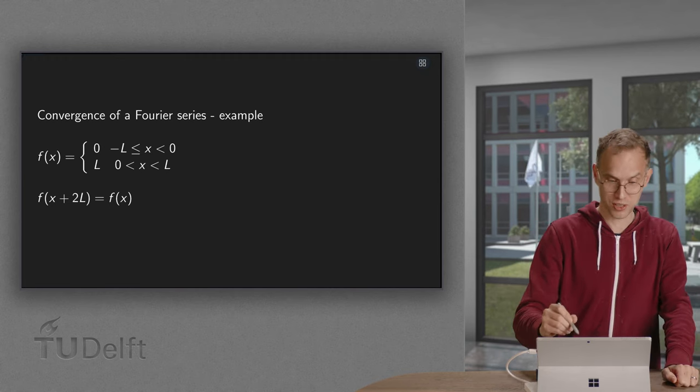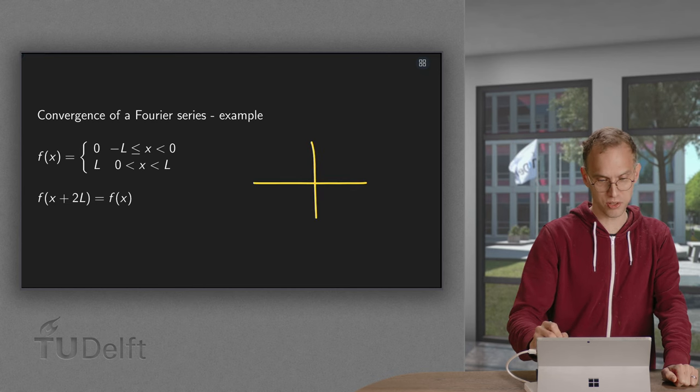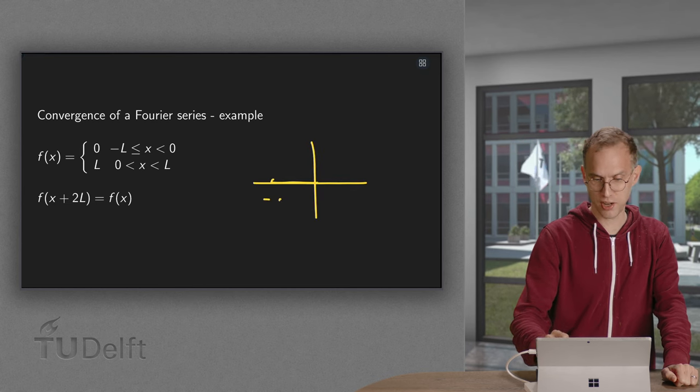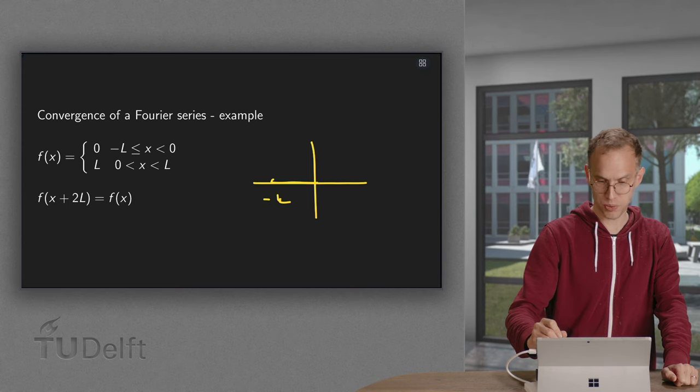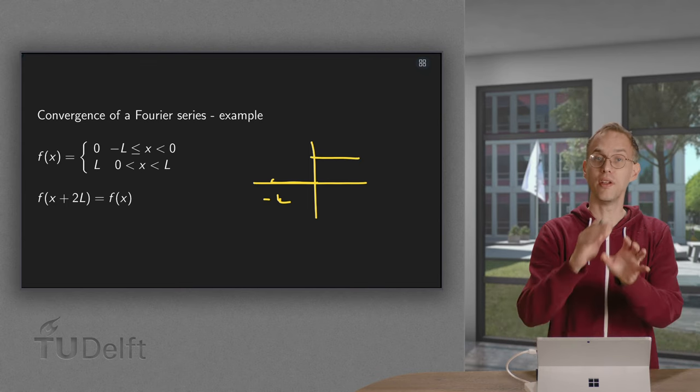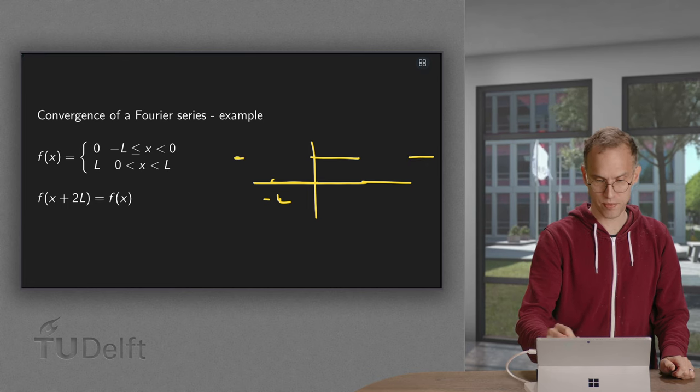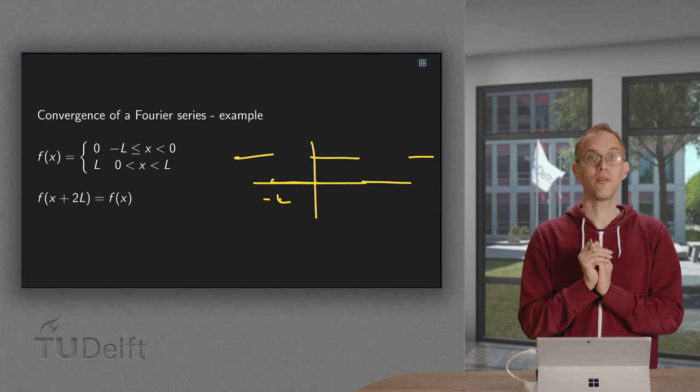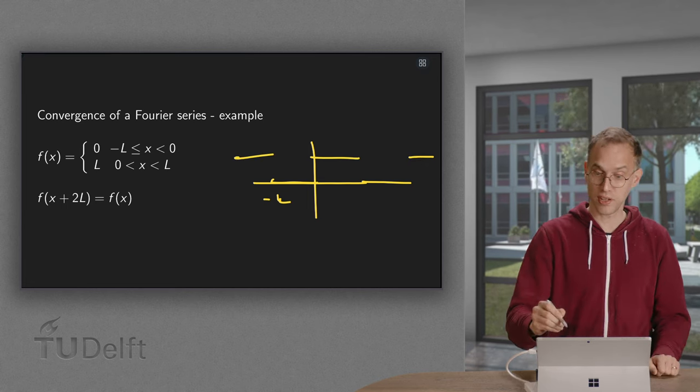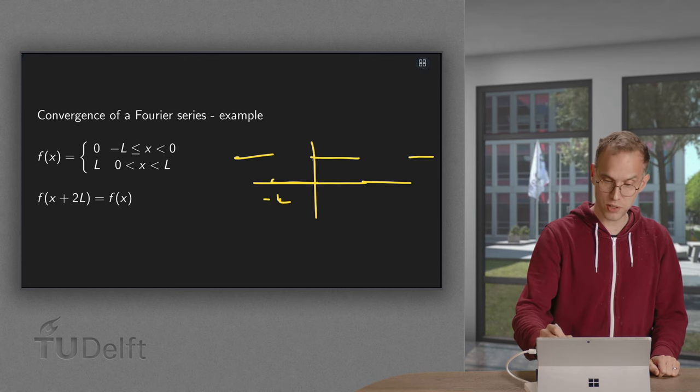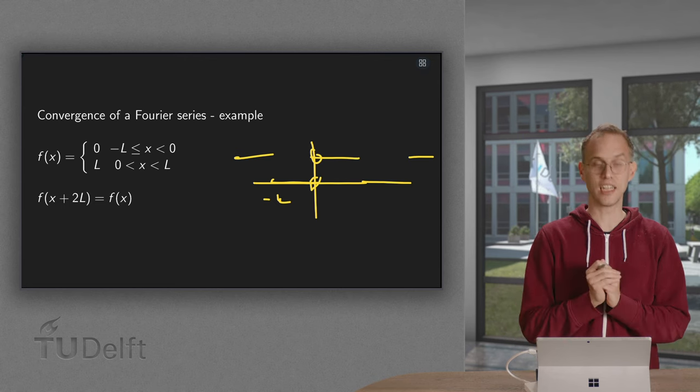So here we have our f of x. We set it to 0 between minus l and 0, and then we jump to l like that. And we do this periodically, so we get a function like that. Okay, so there we have our f of x with a jump discontinuity, of course, at x equals 0.